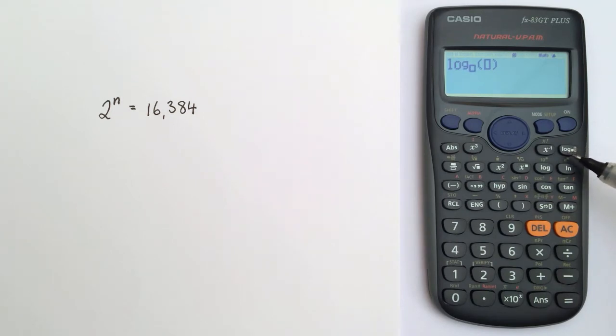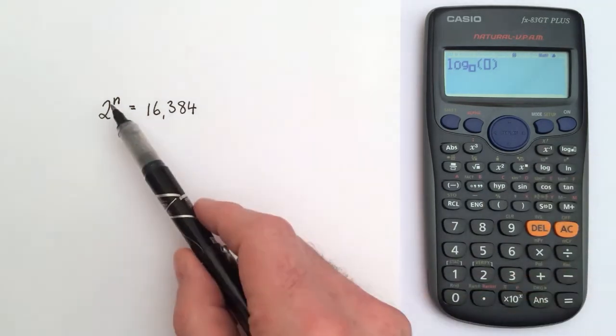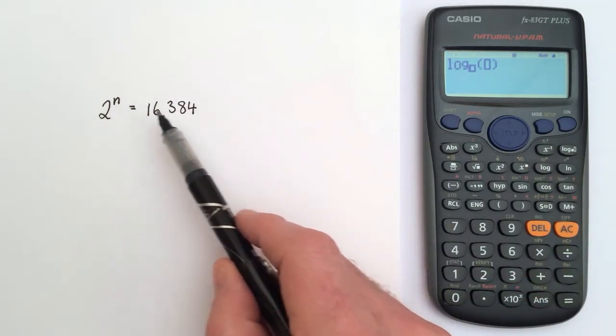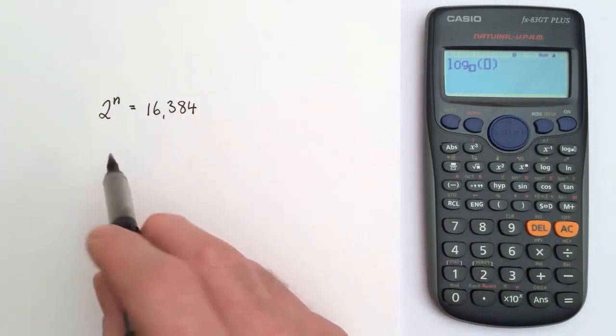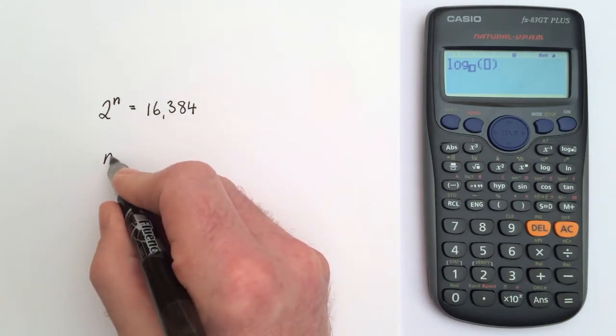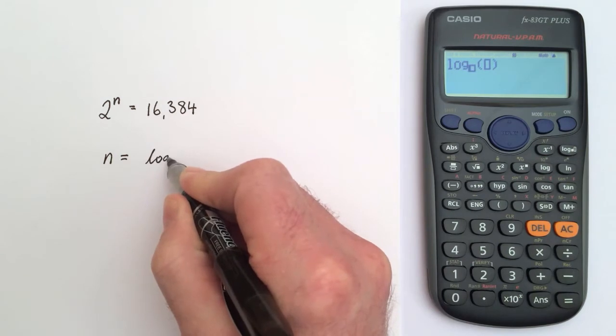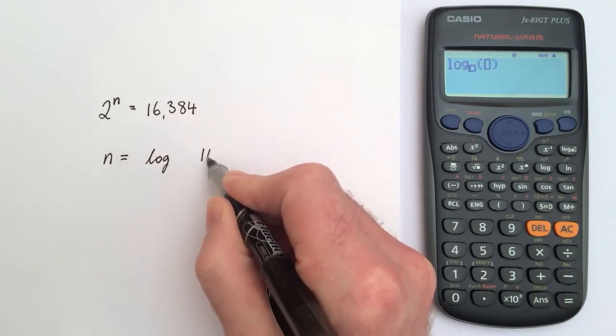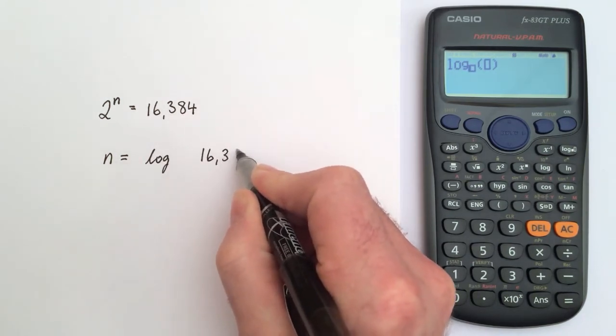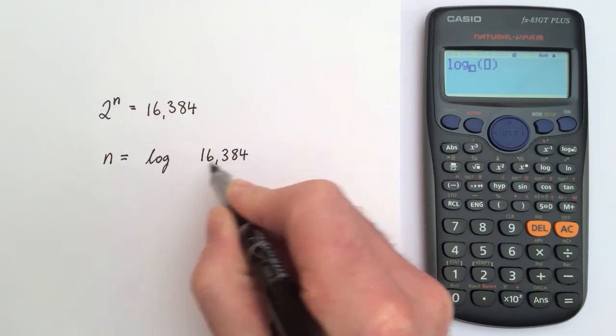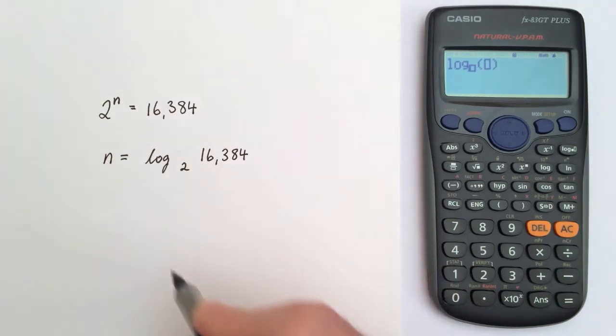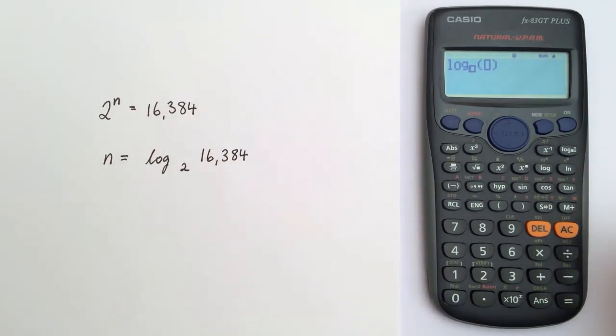Because the log of a number is the power to which the base has to be raised to get that number. So this means that n is equal to the log of the number 16,384 to the base 2.